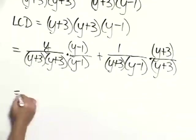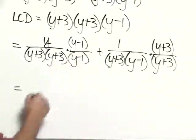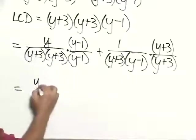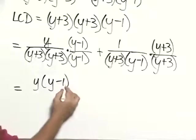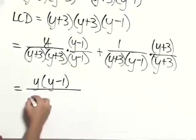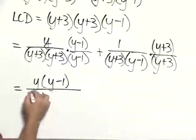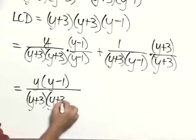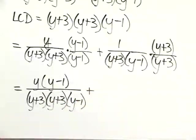now, actually carrying out the multiplication of the numerators, we would have y times y minus 1 all over y plus 3 times y plus 3 times y minus 1,